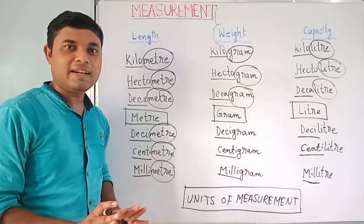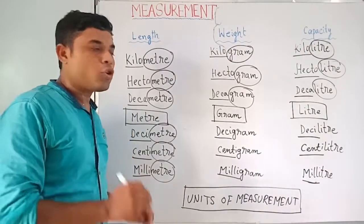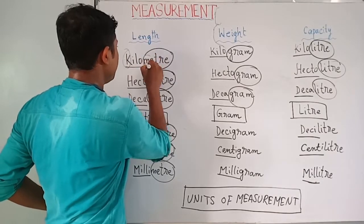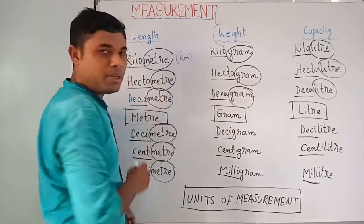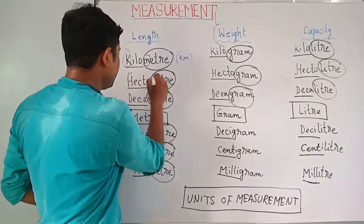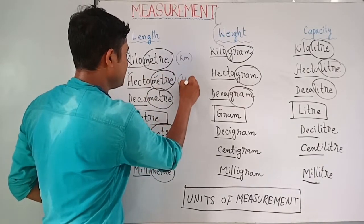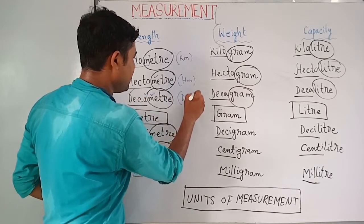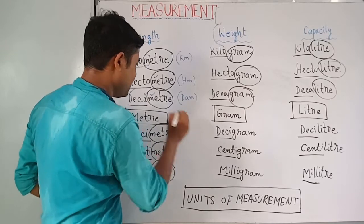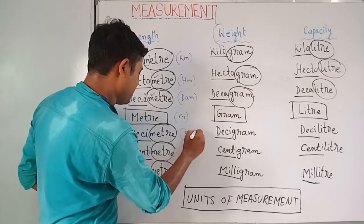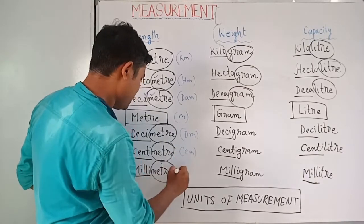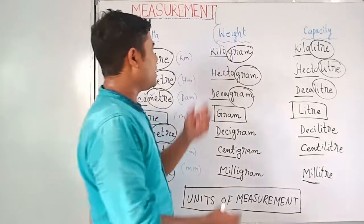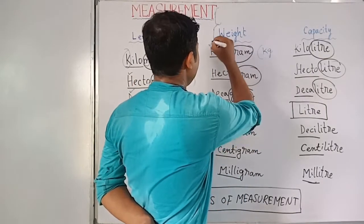Now the short forms of these units: kilometer is km, hectometer is hm, decameter is dam, meter is m, decimeter is dm, centimeter is cm, and millimeter is mm.